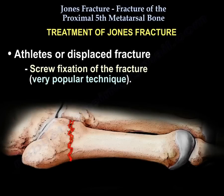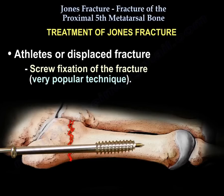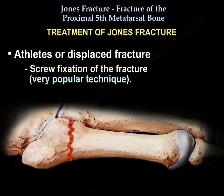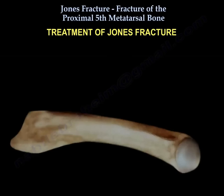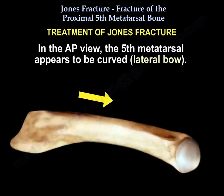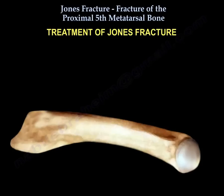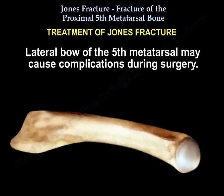In athletes or if the fracture is displaced, screw fixation of the fracture is performed and is a very popular technique. On the lateral view, the canal appears straight and narrow. On the AP view, the 5th metatarsal appears curved — this is called lateral bow — and the lateral bow of the 5th metatarsal bone may cause complications during surgery.